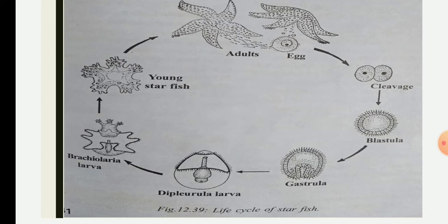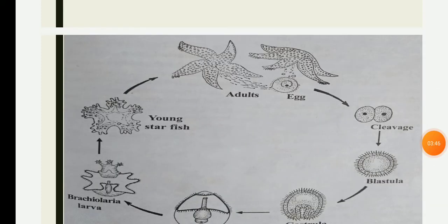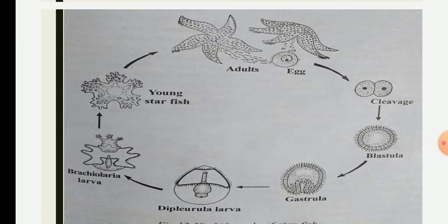The zygote undergoes cleavage — that is, repeated mitotic division — resulting in an increase in the number of cells. The quantity of cytoplasm remains the same but the number and density of cells increases. The daughter cells are generated and they give rise to the blastula. After the formation of blastula, invasion of the blastula cell layer takes place, giving rise to two layers and thus forming a gastrula — that is, gastrulation.